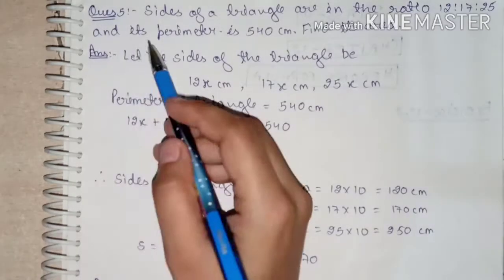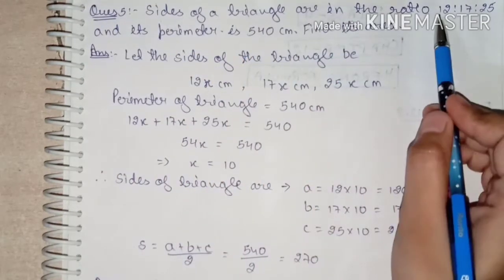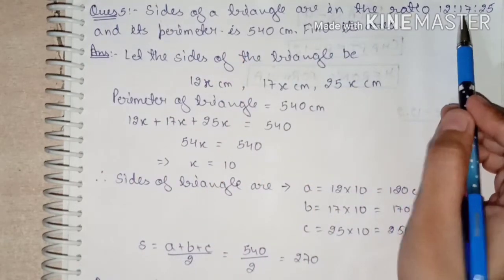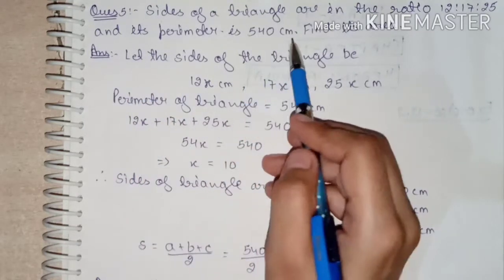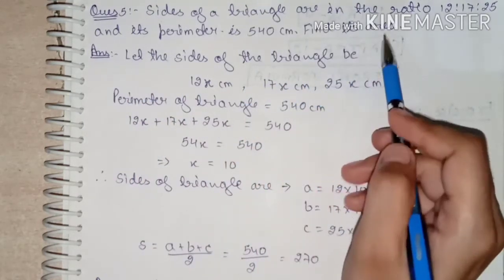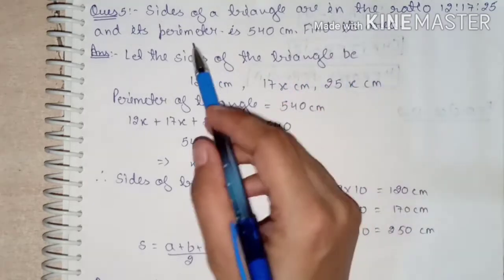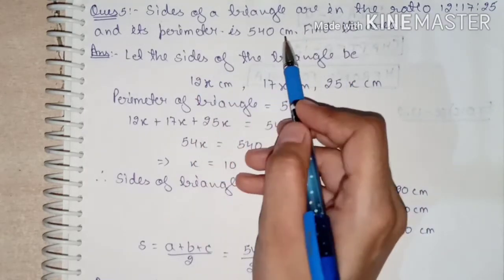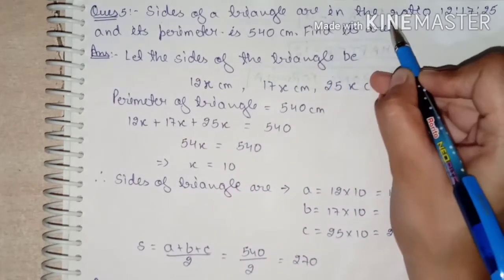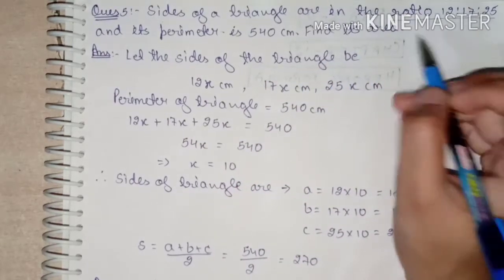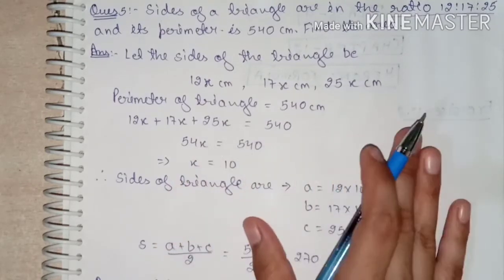Question number 5: Sides of a triangle are in the ratio 12:17:25 and its perimeter is 540 cm. Find its area. Here we need to find the area of a triangle whose perimeter is 540 cm, but the sides are given in ratio form. This is slightly different from other questions, but not too difficult.